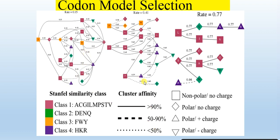A dashed line shows that two amino acids have less than 50% cluster affinity. The shape of each amino acid shows its charge or nature: square-shaped amino acids are non-polar or have no charge, while rounded shapes indicate polar but no charge. Amino acids with an upward-pointing triangle show they are polar with a negative charge.